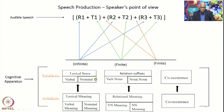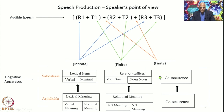Co-occurrence is the co-occurrence of all these individual elements — this is all part of the artha-kasha. This corresponds to the shabda-kasha: the verbal meaning corresponds with the verb-noun relation suffix, the nominal meaning corresponds with the noun-noun relation suffix, and the co-occurrence of meanings corresponds to the co-occurrence of the shabdas — the sounds and elements going to be produced. This is the internal and back-end process of speech production, still at the level of the shabda-kasha.